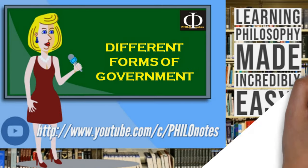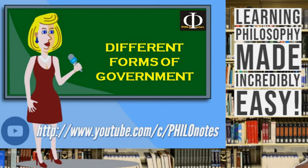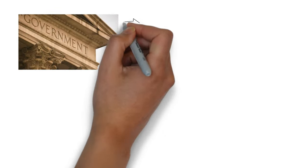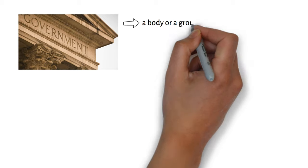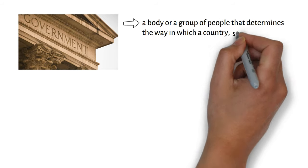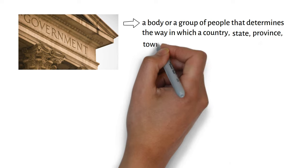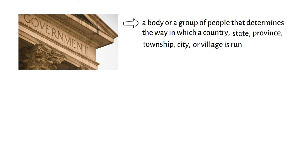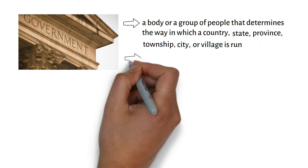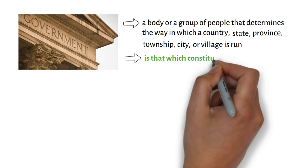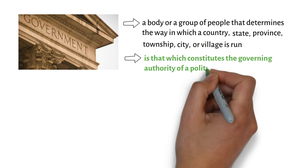Different forms of government. First of all, a government is a body or a group of people that determines the way in which a country, state, province, township, city, or village is run. Put simply, a government is that which constitutes the governing authority of a political unit or organization.